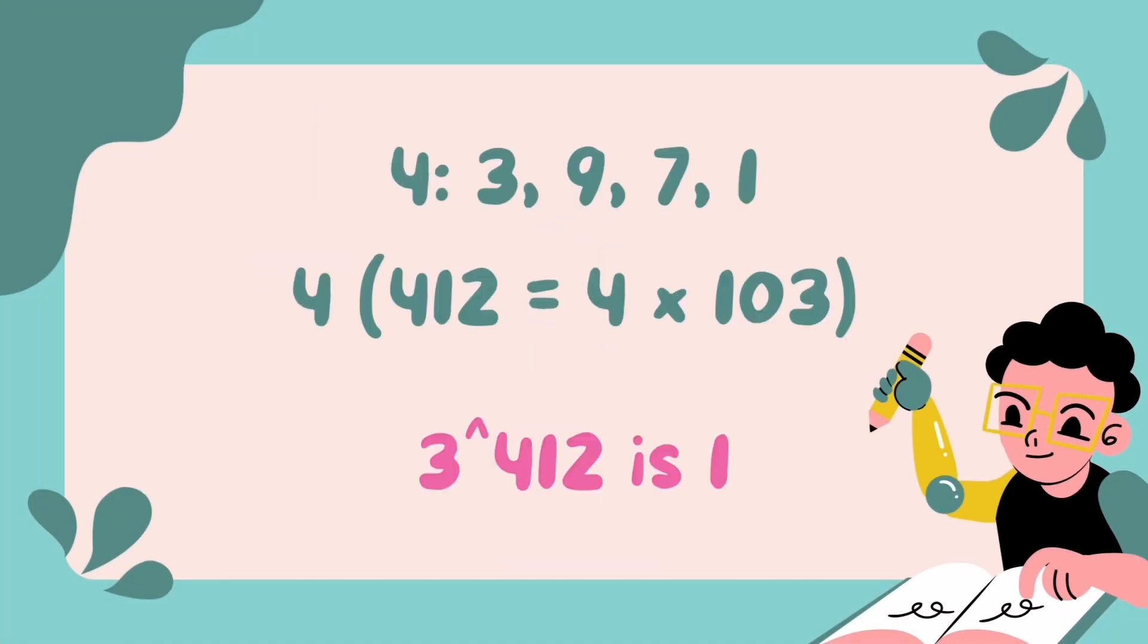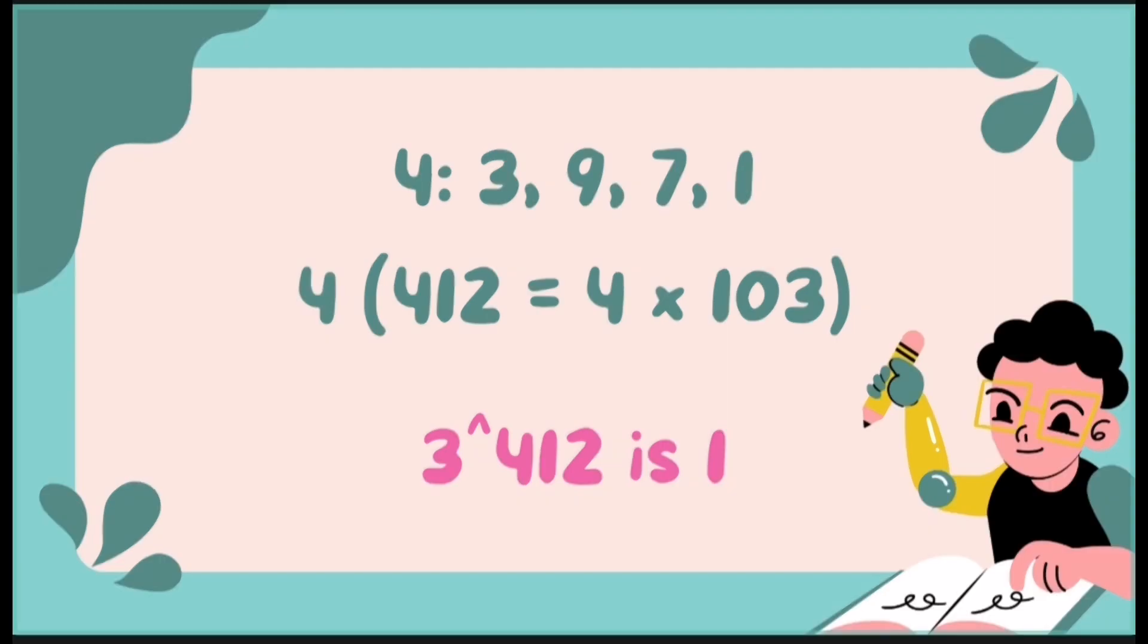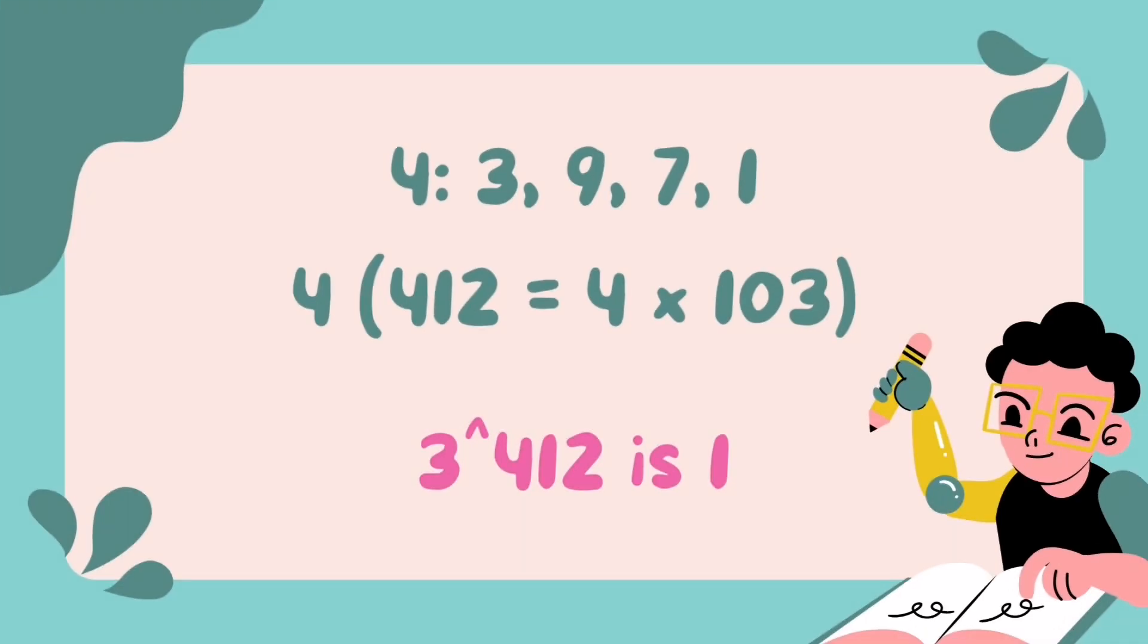We can see that the unit's digit repeat in the pattern of 4: 3, 9, 7, and 1. This means that the unit's digit of any power of 3 that is a multiple of 4 will be 1. Since 412 is a multiple of 4, 412 equals 4 times 103. The unit's digit of 3 raised to 412 is 1.